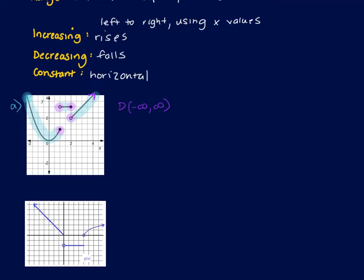If a graph cuts off at the edge, you assume it's an arrow. For the range of graph A, going bottom to top: the lowest value is at zero — it's a solid dot — and the graph goes up from there continuing to positive infinity. Even with breaks in the graph, the left side continues increasing, so the range is from zero with a bracket to positive infinity.